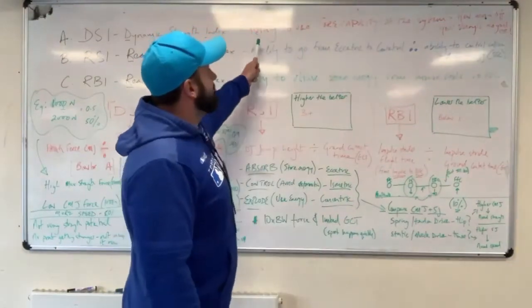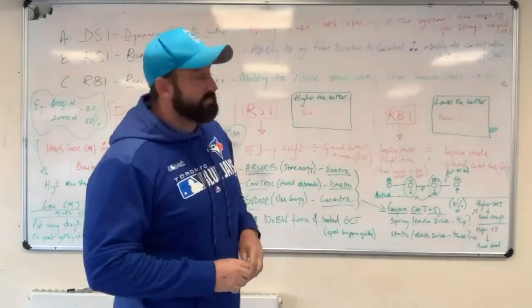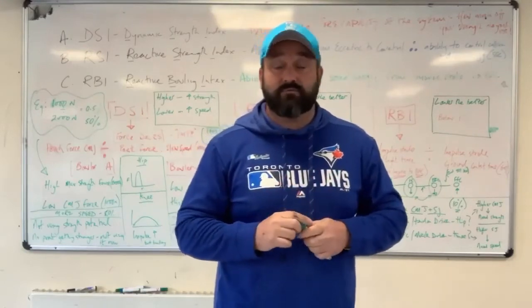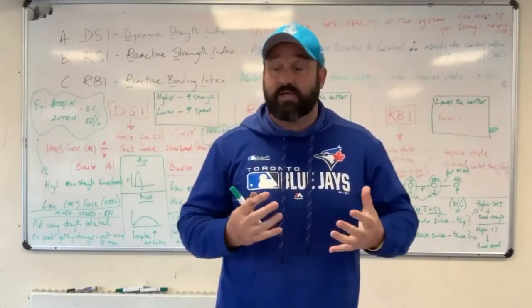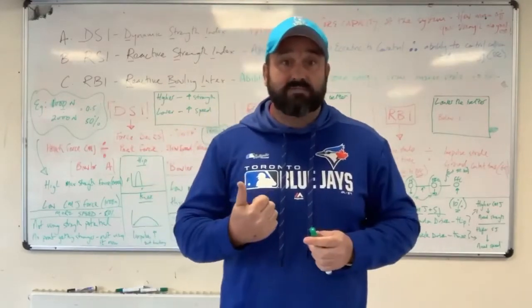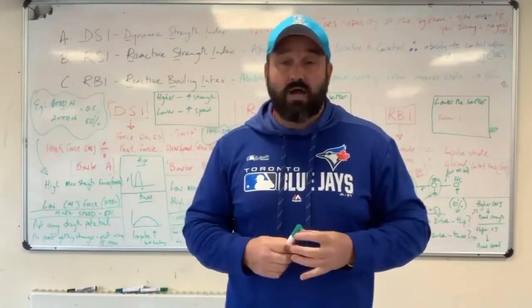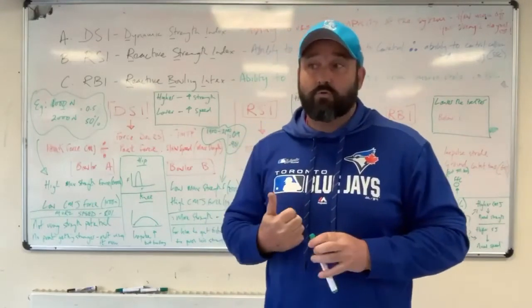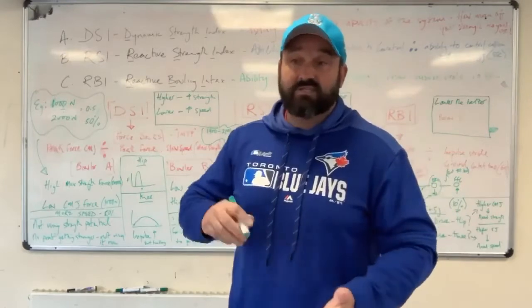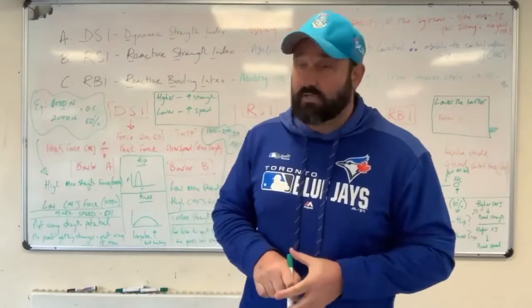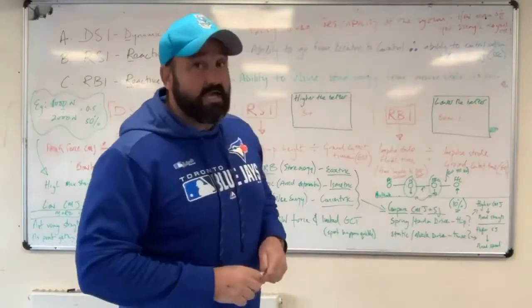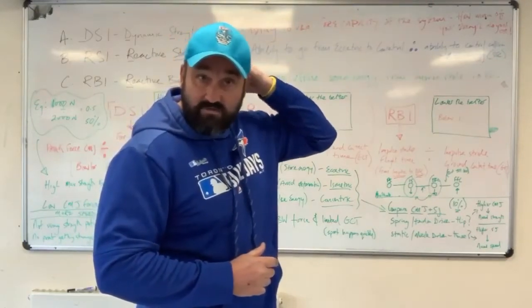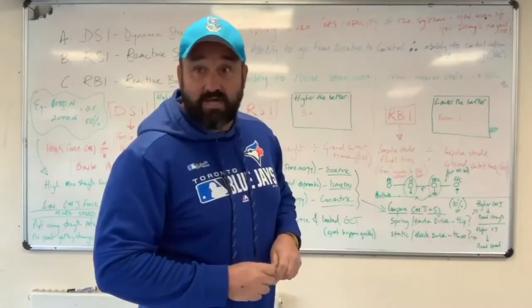The DSI is the ability to use the force capacity of the system — so how much of your strength do you use for fast bowling or anything explosive? It's about mass-specific force, but it's also how efficient your delivery system is. Ground contact time on bowling happens so quickly that you need to be able to exert force at minimum contact time. The DSI identifies how much of your strength potential you're using for explosive fast skills.